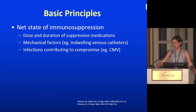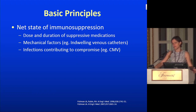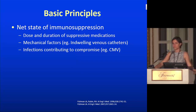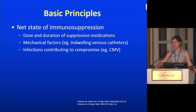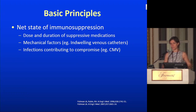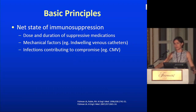You also have to think about mechanical factors contributing to immunocompromise. In the renal transplant patient, this might be an indwelling venous catheter — particularly in someone who just had transplant and needs dialysis without a fistula. Another example is lymphedema from disruption of pelvic lymph nodes after a kidney transplant — when you have lymphedema, you're very predisposed to getting streptococcal cellulitis in that extremity.